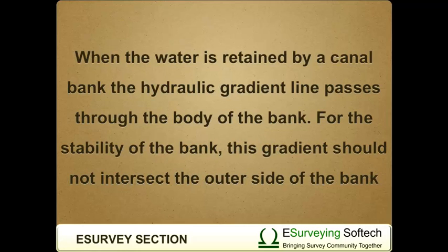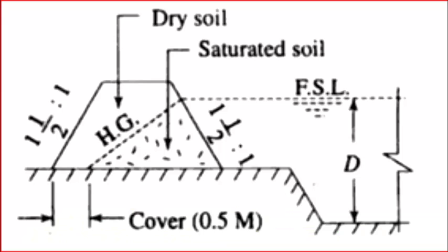When the water is retained by a canal bank, the hydraulic gradient line passes through the body of the bank. For the stability of the bank, the gradient should not intersect the outer side of the bank. It should pass through the base and a minimum cover of 0.5 meter should always be maintained.